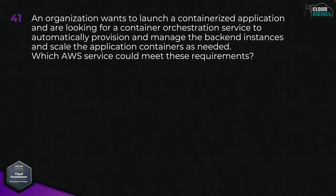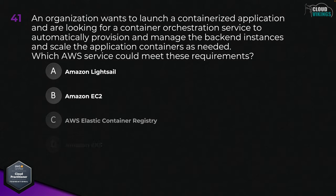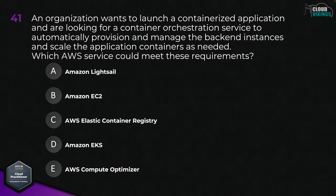Question forty-one: an organization wants to launch a containerized application and is looking for a container orchestration service to automatically provision and manage the backend instances and scale the application containers as needed. Which AWS service could meet these requirements? Options are: A, Amazon Lightsail; B, Amazon EC2; C, AWS Elastic Container Registry; D, Amazon EKS; or E, AWS Compute Optimizer. The best answer here would be D, Amazon EKS.